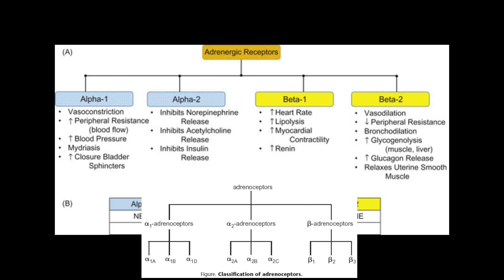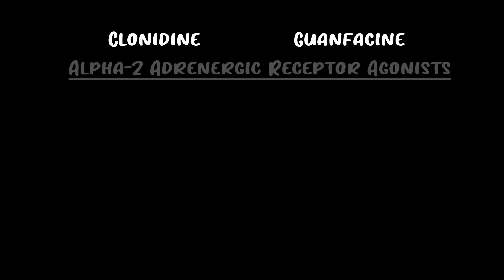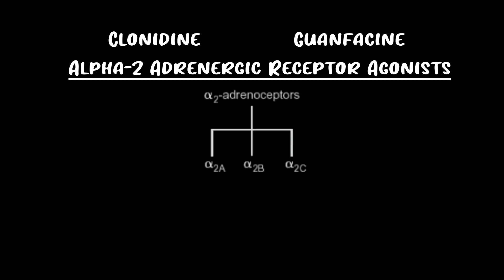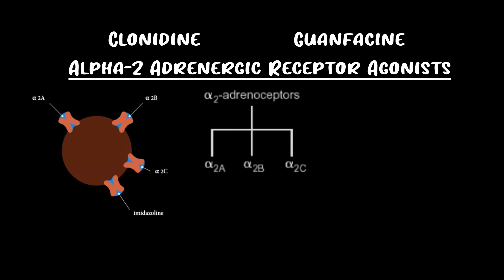Clonidine is an alpha-2 agonist, and there are actually three subtypes of alpha-2 receptors: alpha-2a, alpha-2b, and alpha-2c. Alpha-2a is the one mostly implicated in helping ADHD, but clonidine has activity at all three. Clonidine also has activity at imidazoline receptors, which are probably involved in reducing blood pressure even further.